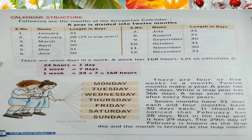Calendar structure. Now we will learn the structure of our calendar. Following are the months of the Gregorian calendar. A year is divided into 12 months. January has 31 days. February has 28 days, and in leap years, February has 29 days. March has 31 days, April has 30 days, May has 31 days, June has 30 days.